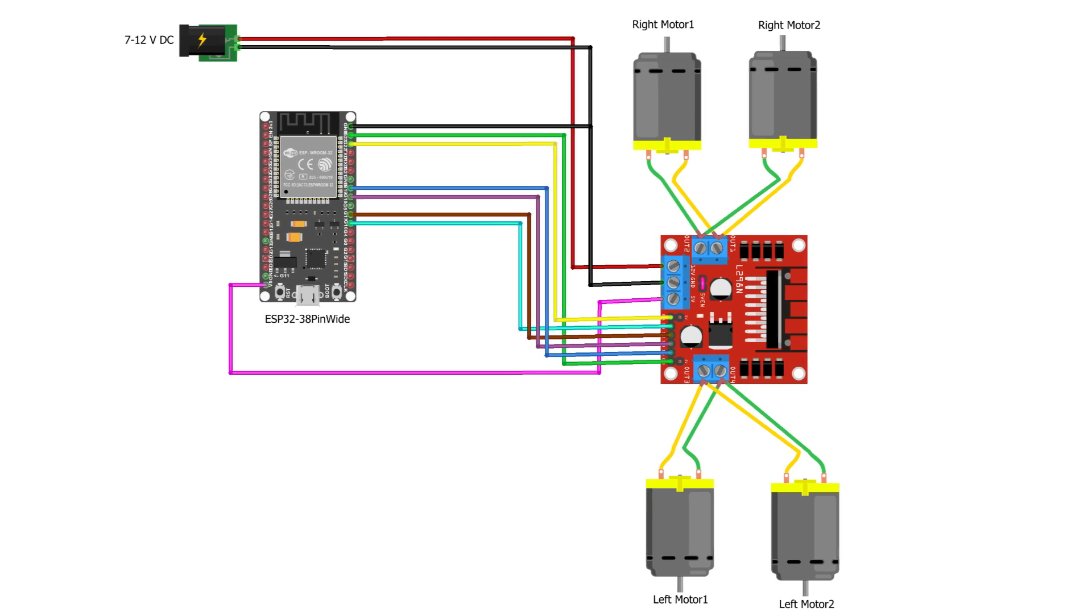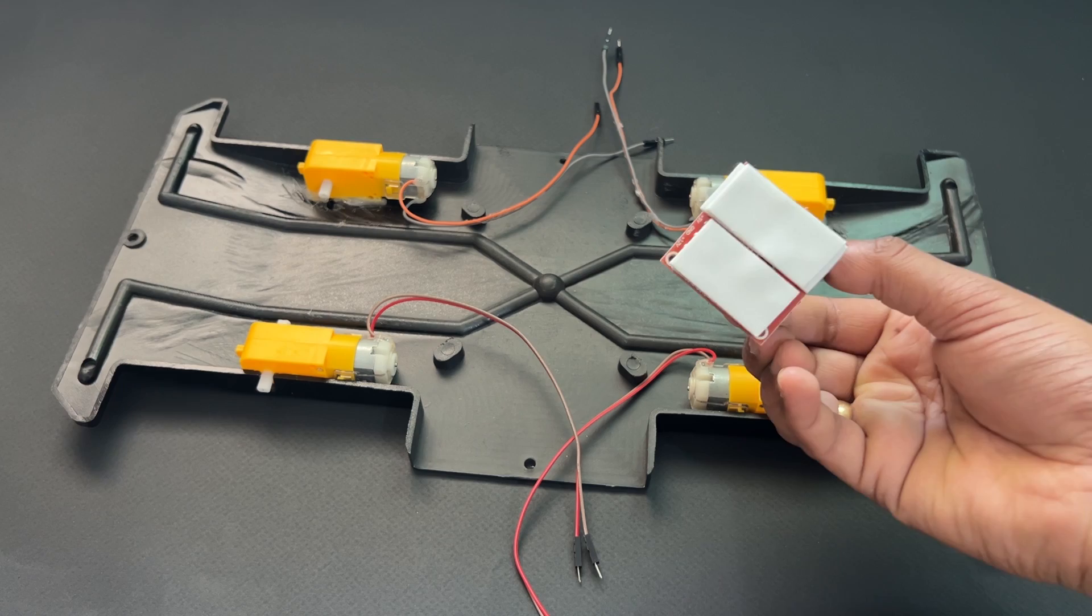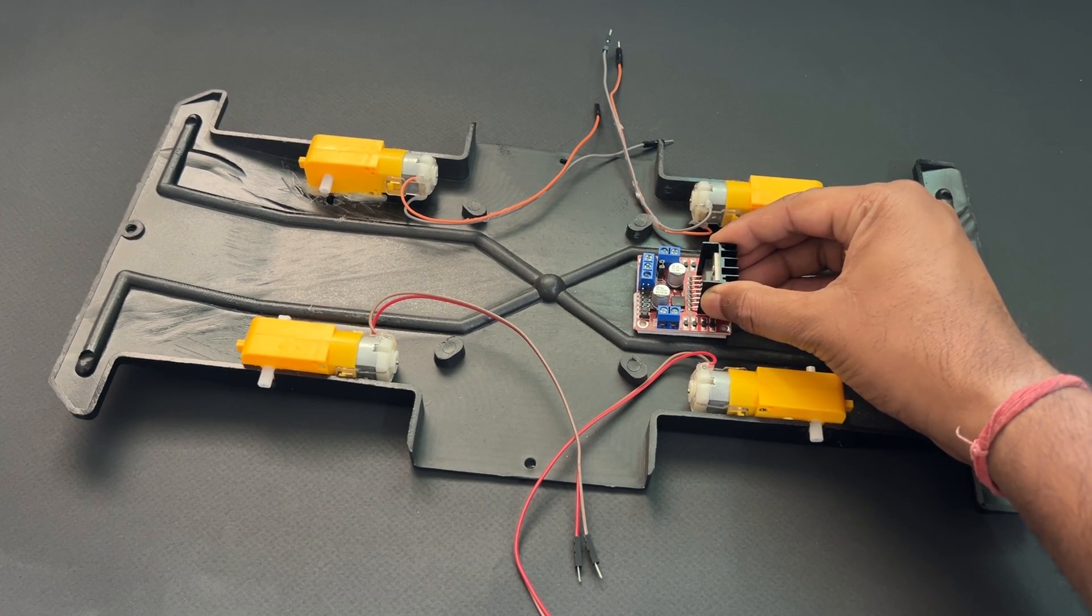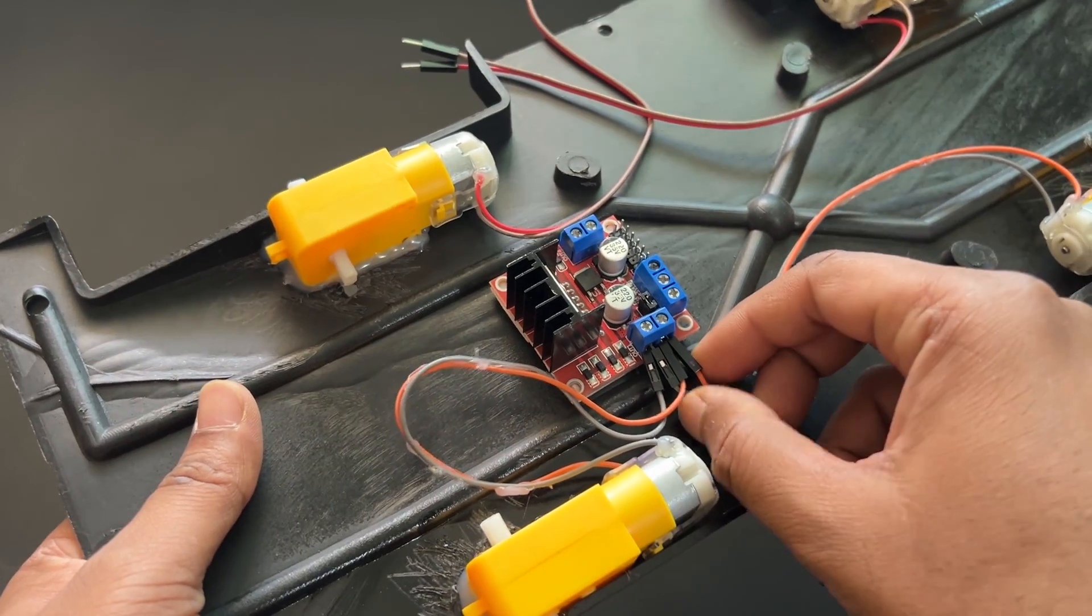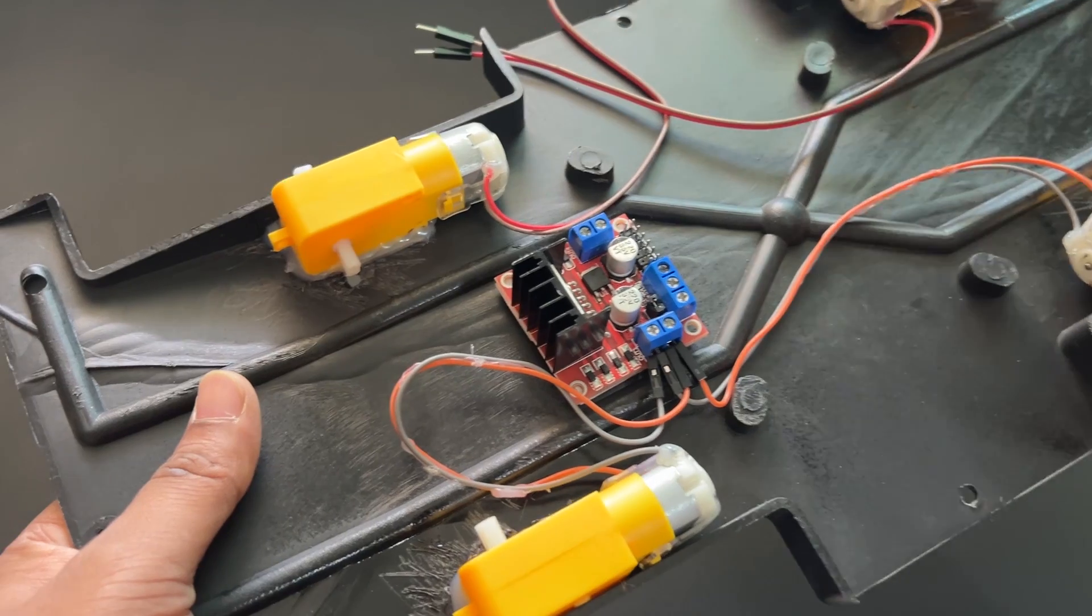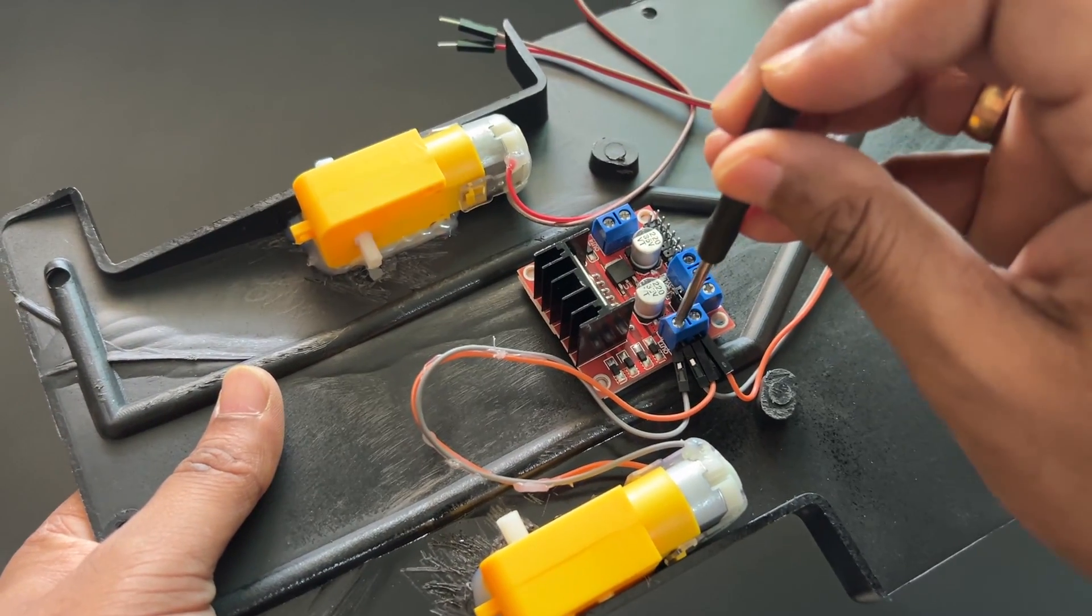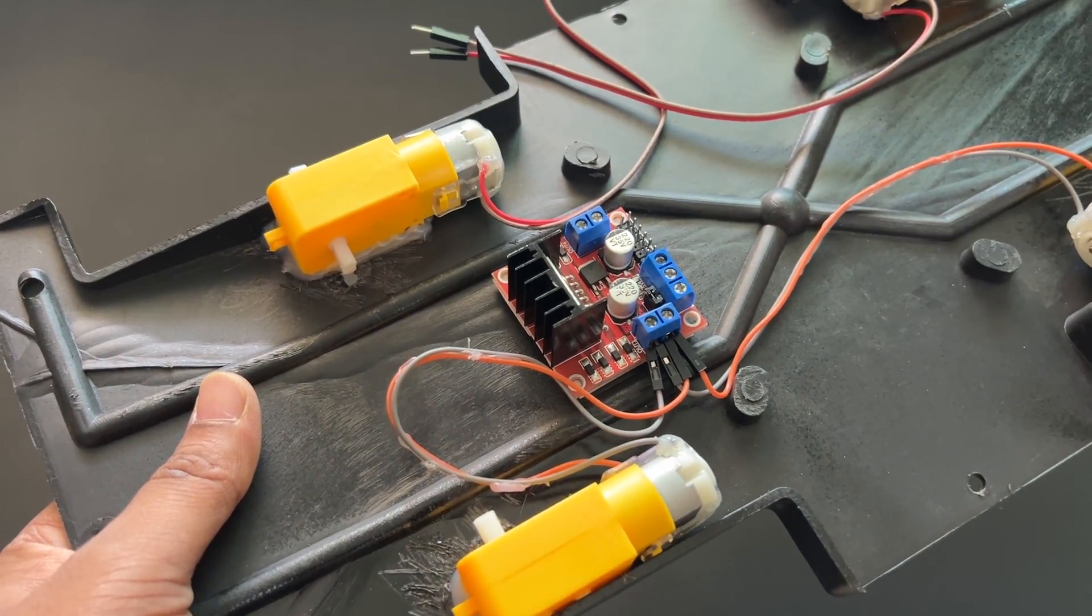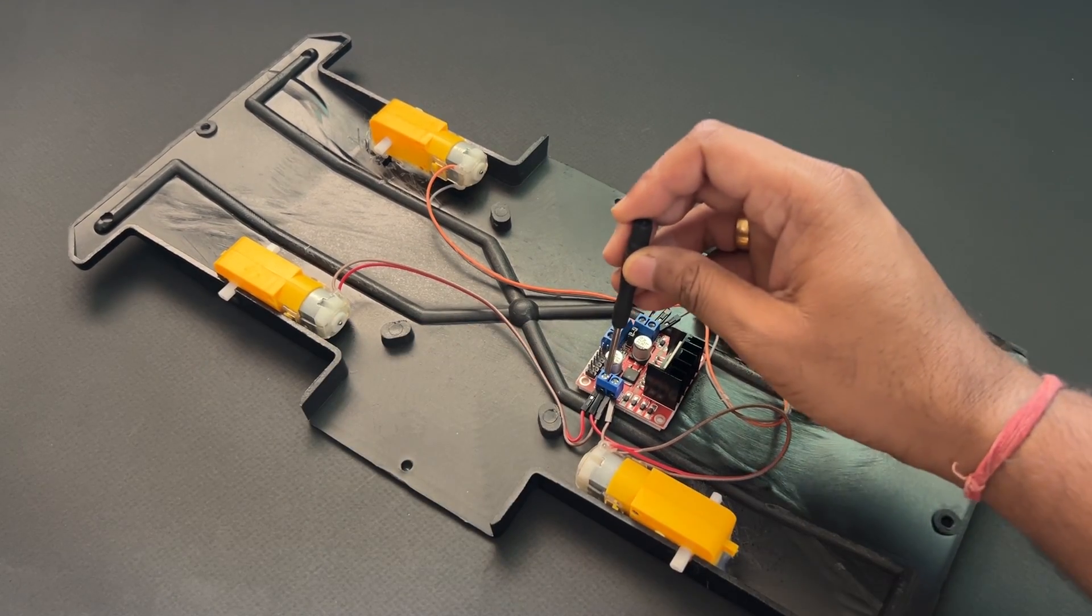Now let's make a connection as per the circuit diagram. Attach the L298N motor driver module on the car chassis using double-sided tape. Connect the right side motor to OUT1 and OUT2 pins of the L298N motor driver module. Now connect the left side motor to OUT3 and OUT4 pins of the motor driver module.